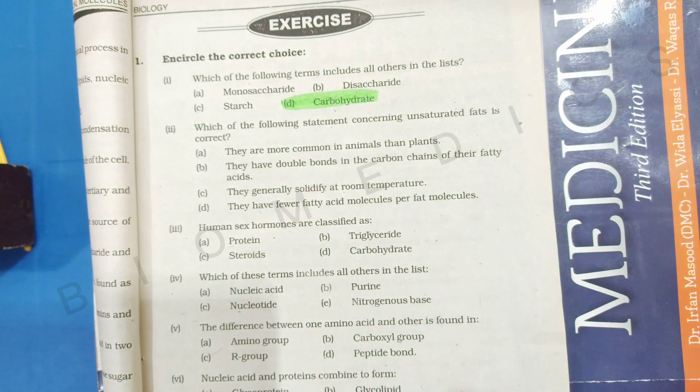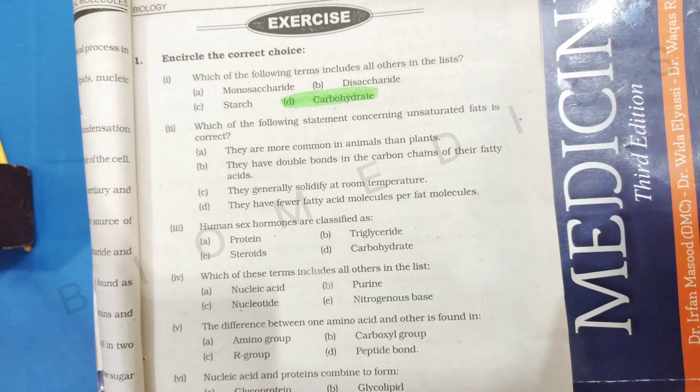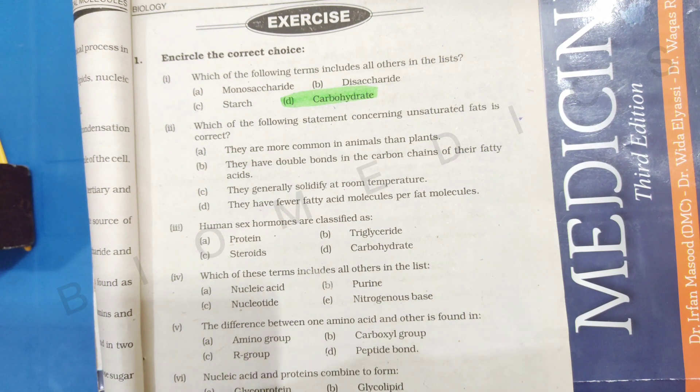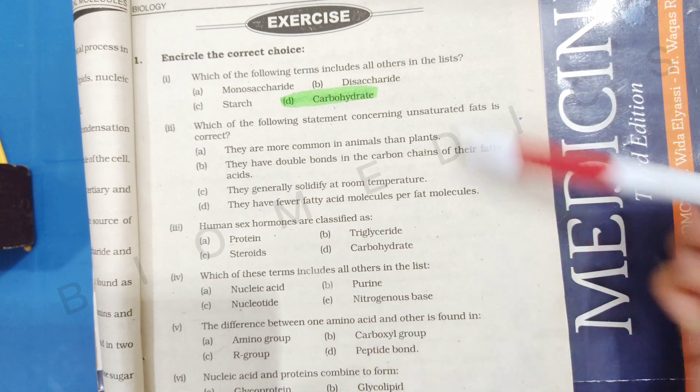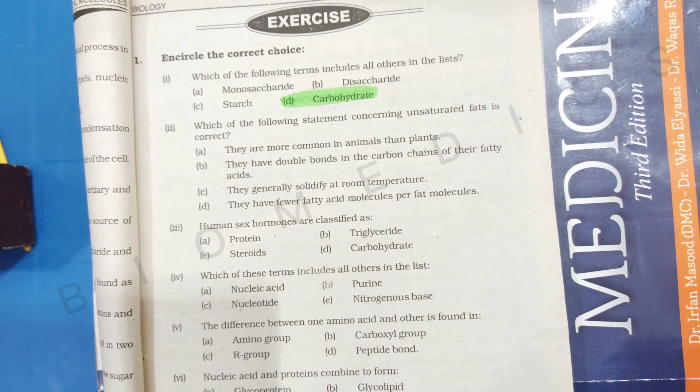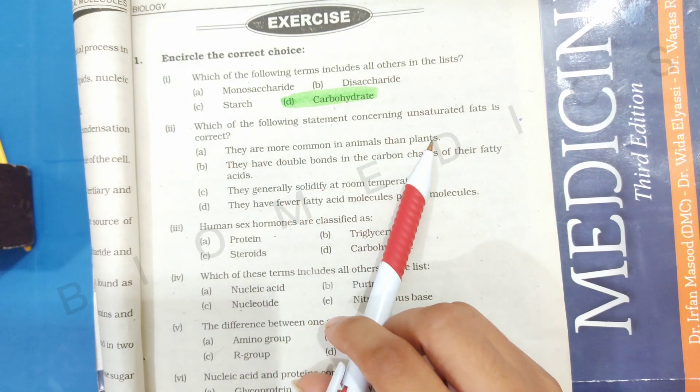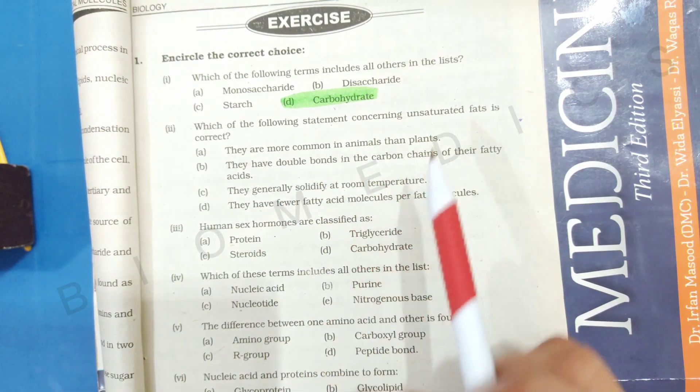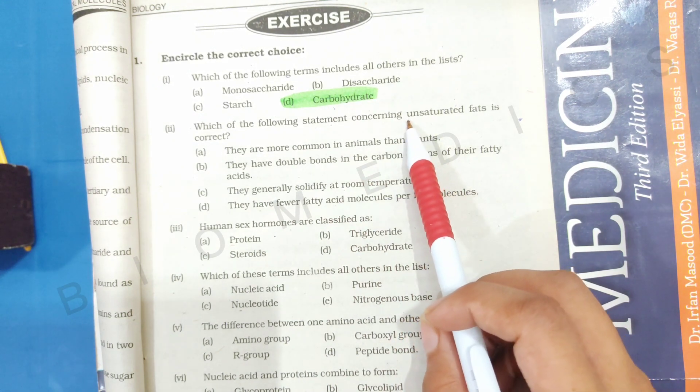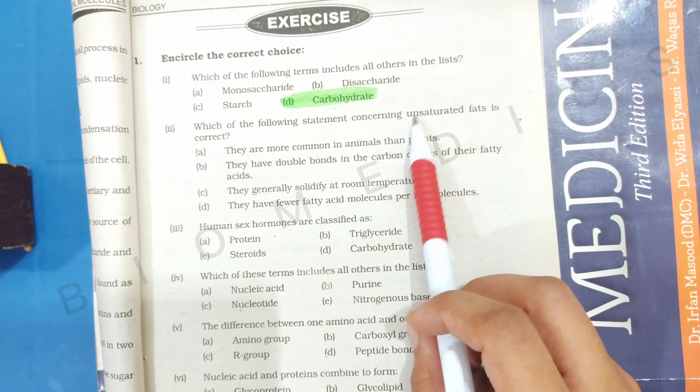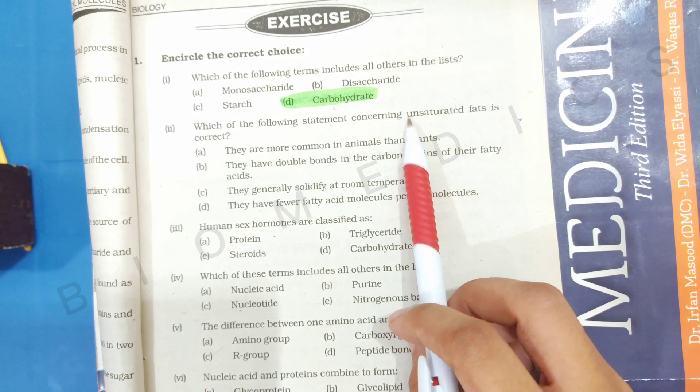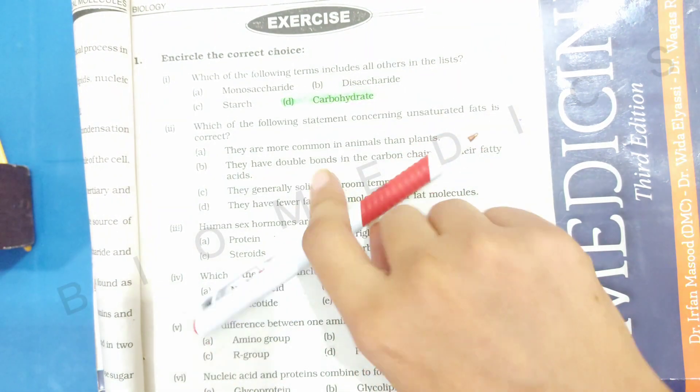After this, we have a question: which of the following statements concerning unsaturated fatty acids is correct? First, we have given that they are more common in animals than plants. So I will tell you that unsaturated fatty acids basically are fatty acids in which we have double or triple bonds. We have single bonds and we call them saturated fatty acids.